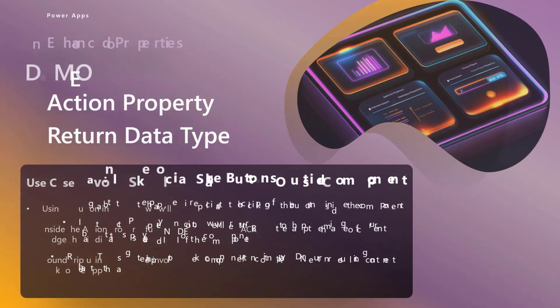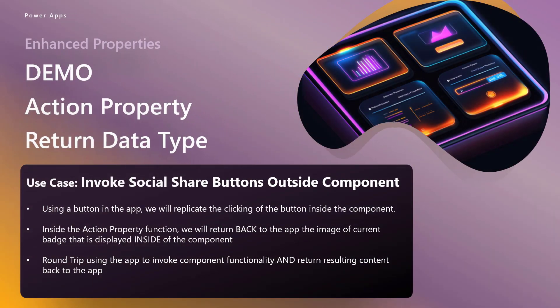So what does the demo look like? We're going to invoke a social share button outside the component. Our component will have share buttons for Twitter/X, and we'll simulate that button click from the app side. Inside the action property function, we're going to return back to the app the image of the current badge displayed inside the component, whether the component's visibility is displayed or not. It results in a round trip: the app invokes the functionality, that information gets returned back to the app, and the app can do something with it.